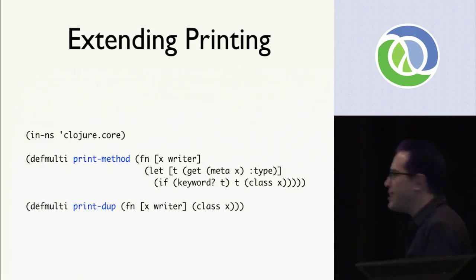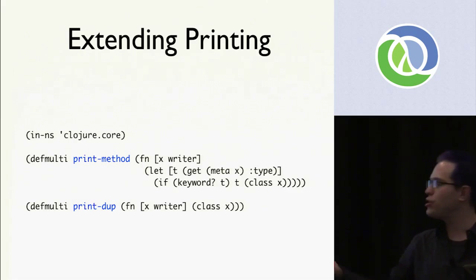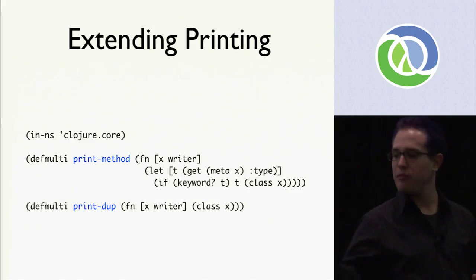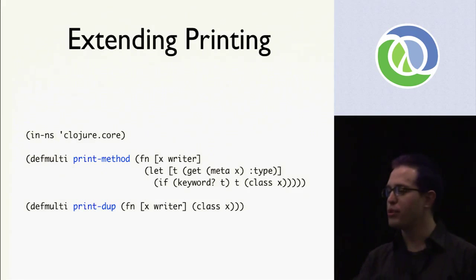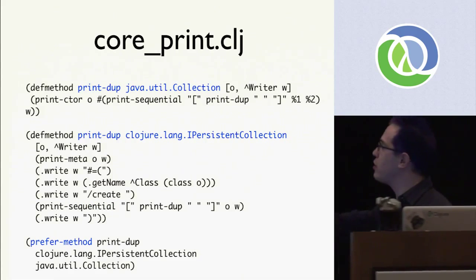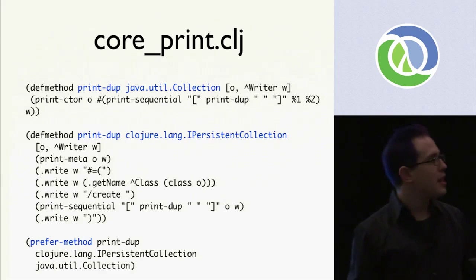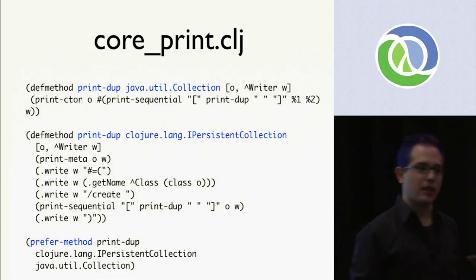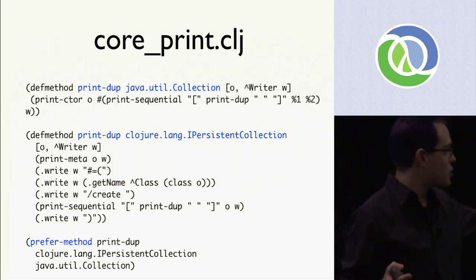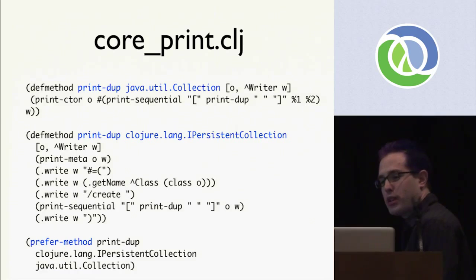The other thing you can do with the printer is extend it to new types. In Clojure, in clojure.core/print, you will find two methods: print-method and print-dup. They're very similar — they both dispatch on the type of an object. Print-method is called for normal printing with print and PR; print-dup is called when print-dup is true. If you look in Clojure's source code at core_print, you will find lots of these method definitions for lots of different types, including prefer-method declarations. You can add these methods for your own types, other Java classes, things you want to be able to print and read back.